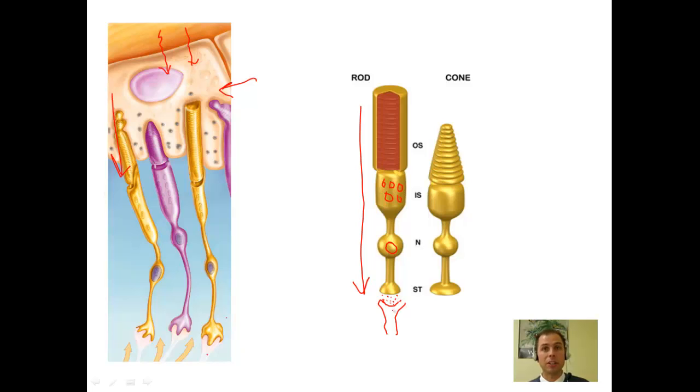Functionally, we also see some major differences in these cells though. First, for cones, we can remember that just as this starts with the C, they are responsible in detecting color.